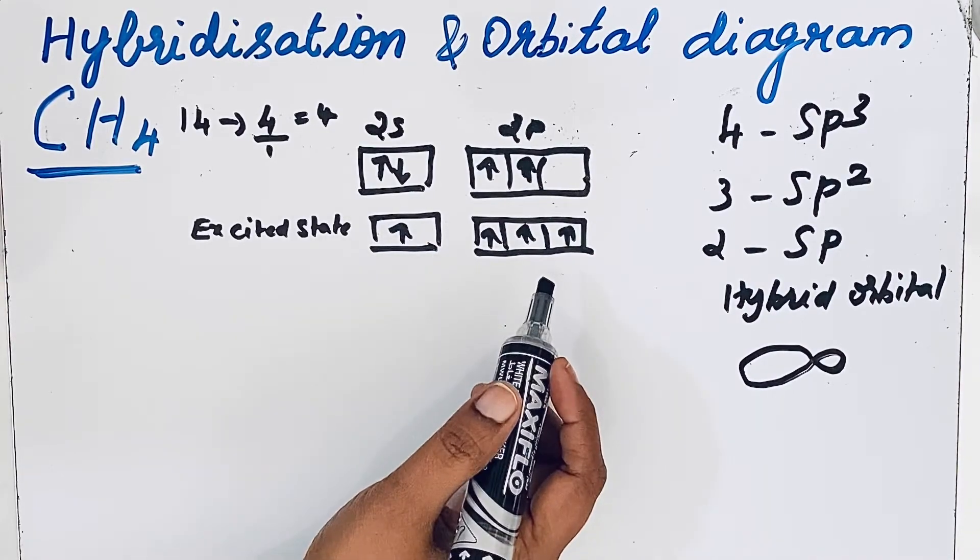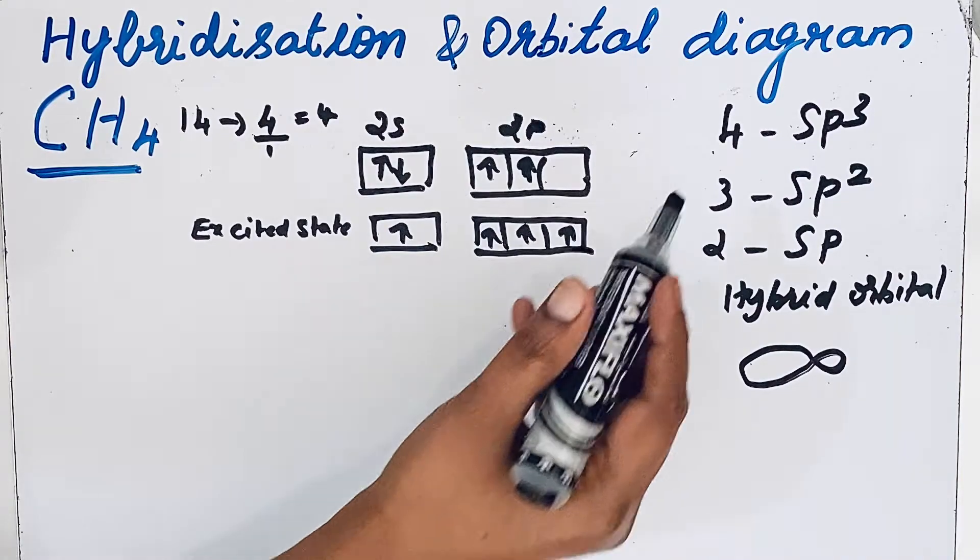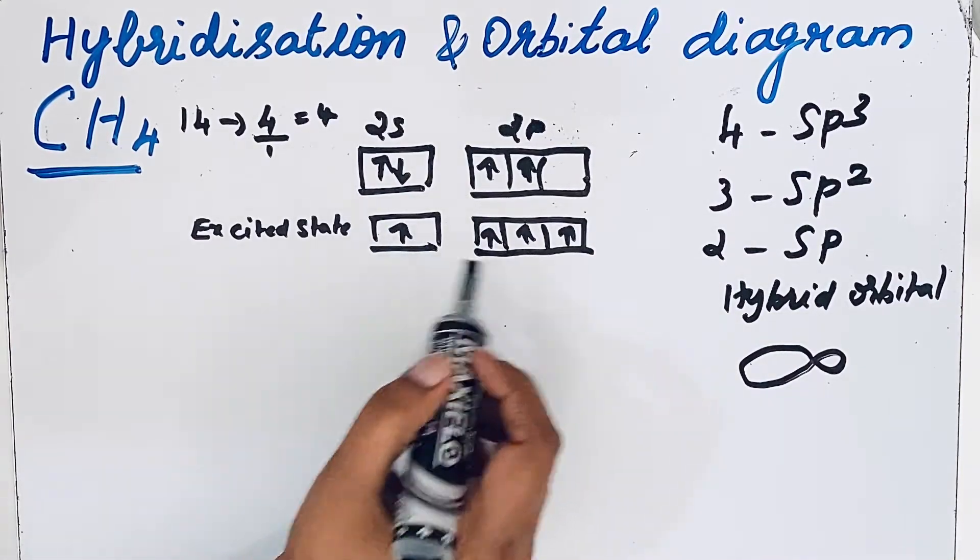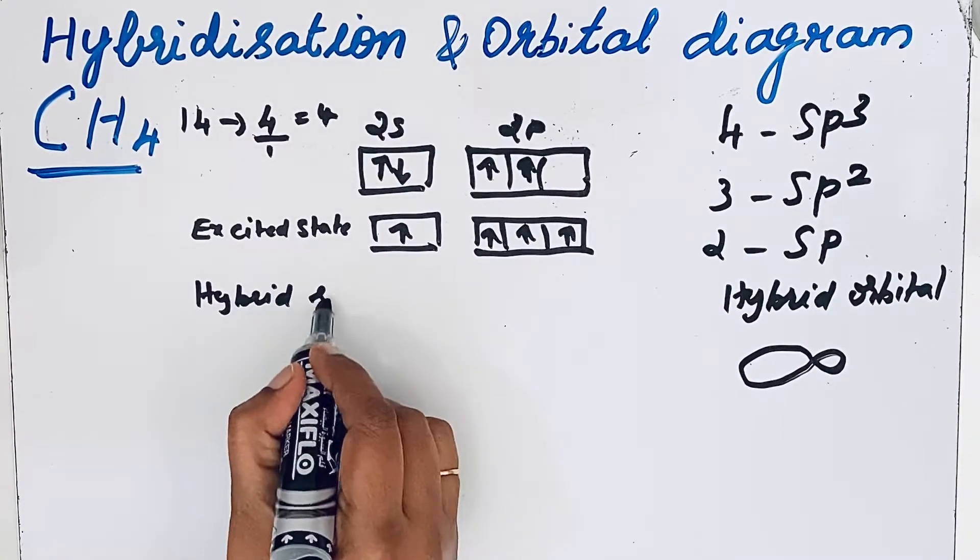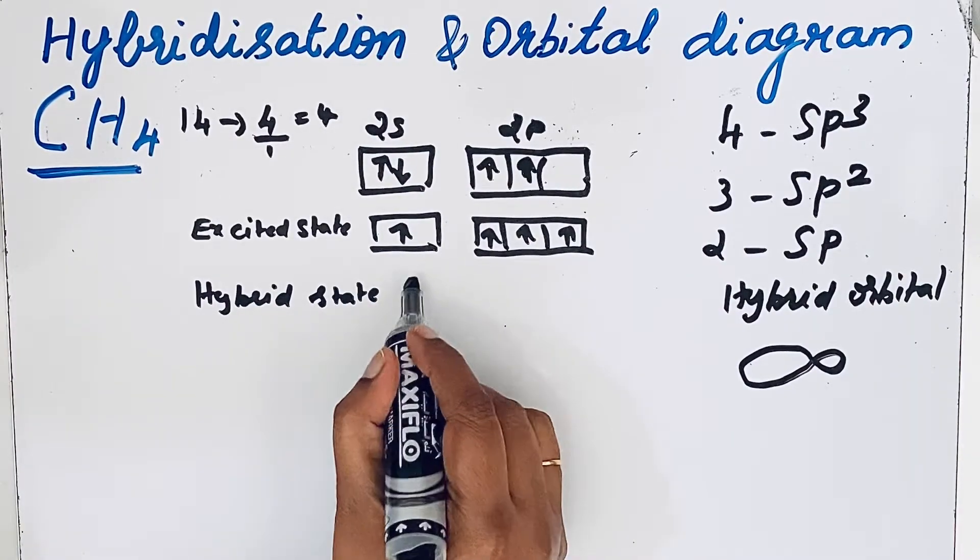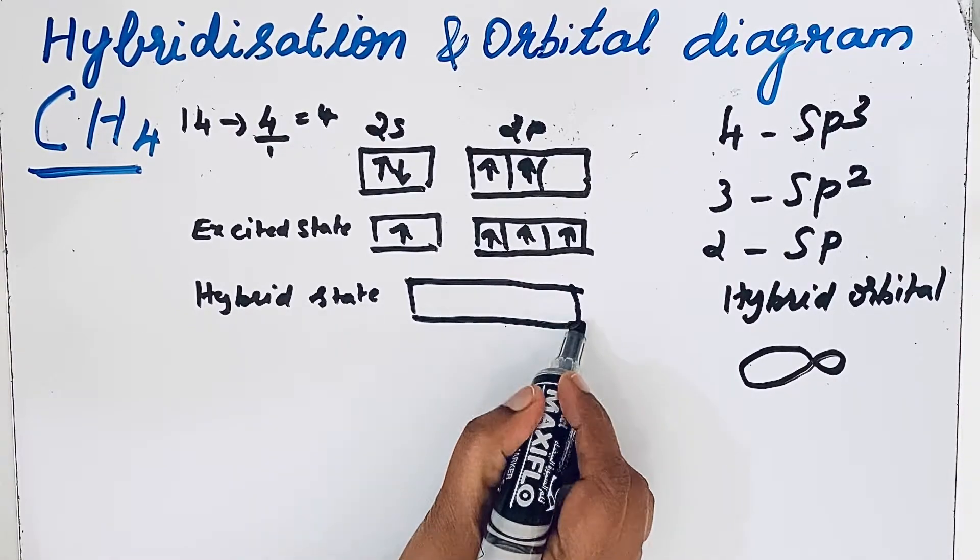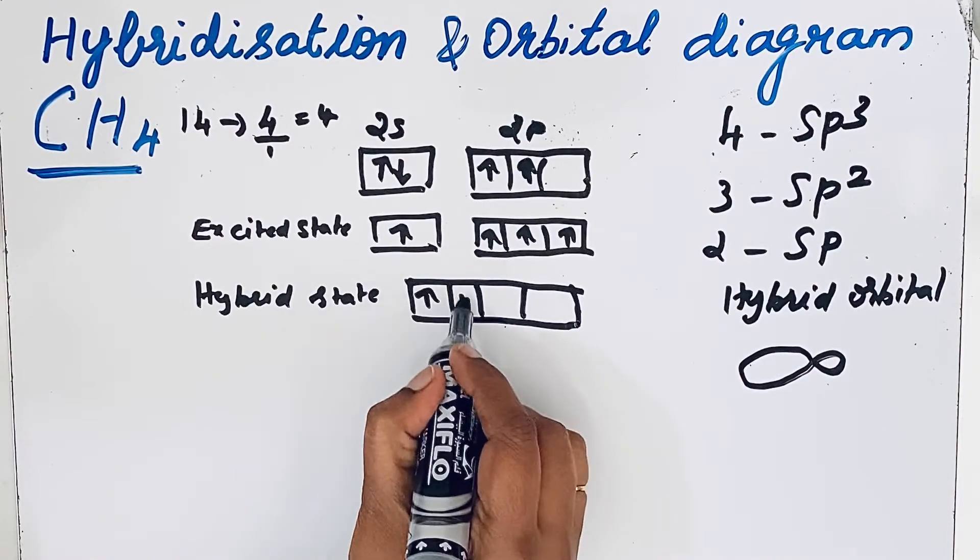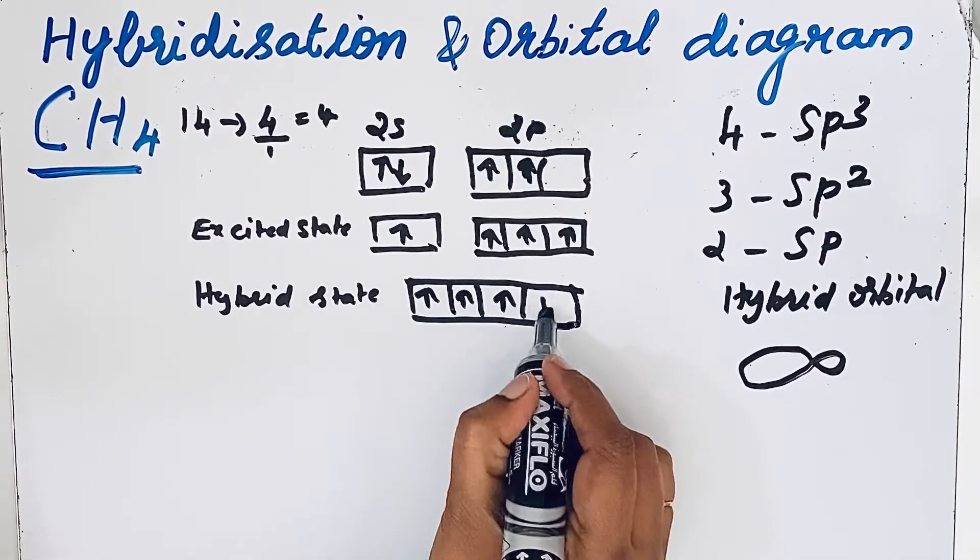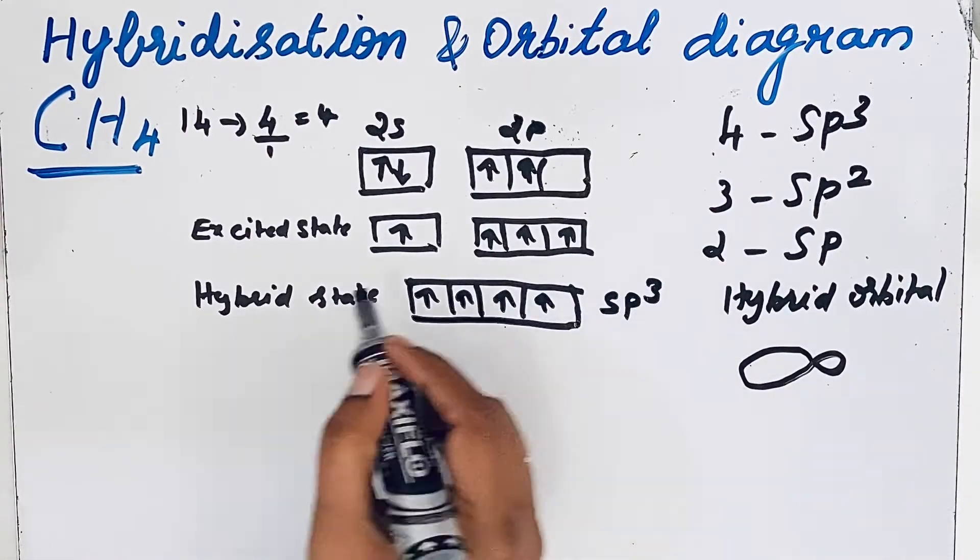Next one is hybridization. So during hybridization they intermix and they will produce sp3 hybridization because 4 orbitals are present. So in hybrid state we will get 4 orbitals of equal energy. 1, 2, 3, 4. So each one contains one unpaired electron. That is why it is called sp3 hybridization.